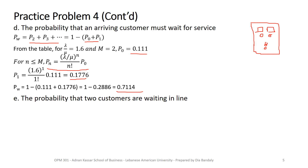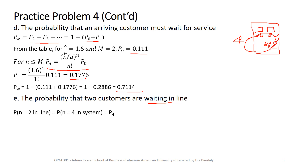For the last part: the probability that exactly two customers are waiting in line. Two customers waiting in line means both servers are busy plus two in queue, so there are four total in the system. Therefore, P(2 in line) = P(4 in system). Our probability formulas work in terms of n in the system, so this is P(4).